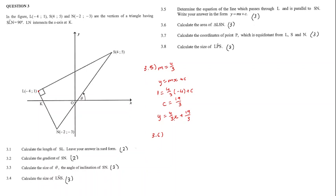Question 3.6. Calculate the area of triangle LSN. We know that the length of SL is equal to 4 root 5, which we calculated in the first question. We now need to get the length of LN. LN is equal to negative 4 minus minus 2 squared plus 1 minus minus 3 squared.